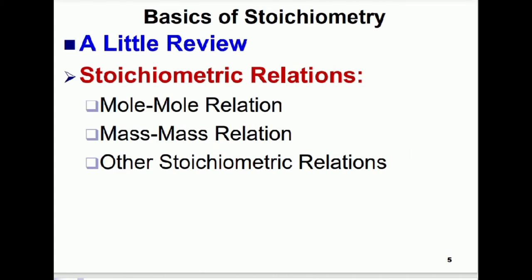In this lecture we discuss stoichiometric coefficients and how to find them. We can divide stoichiometric calculations into three parts: Mole-Mole Relation, Mass-Mass Relation, and other stoichiometric relations. In Mole-Mole Relation, if you have one mole of a substance you can find the moles of a second substance. In Mass-Mass Relation, if you have the mass of one substance you can find the mass of another. Other relations include volume-mass, mass-volume, and mass-mole relationships.